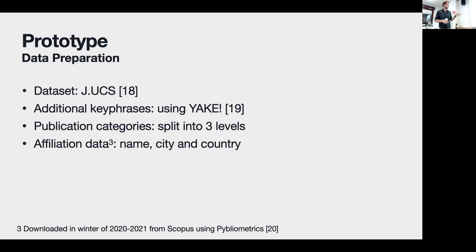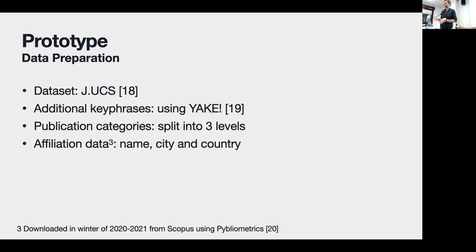For the dataset, we used the JOEKS dataset because there were no licensing issues, we had access to it and to the metadata, and it was diverse enough for this example. We also extracted additional keyphrases using Yake, split paper categories into three levels to provide more insightful graphs, and extracted additional affiliation data including the affiliation name, city, and country — so in the graph you can explore how different authors from different countries interact within your specific search results.